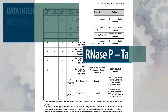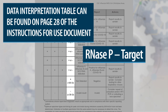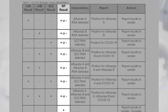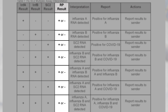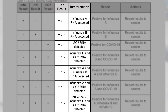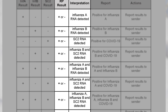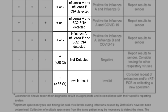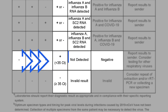The RNAs P target in the Flu SC-2 multiplex assay serves as an internal control for the assay and is used in conjunction with data from other targets for interpretation of an individual specimen. The RNAs P target should be positive, meaning it should have a CT value of less than 35 for all clinical specimens in the absence of a signal for one of the viral targets.